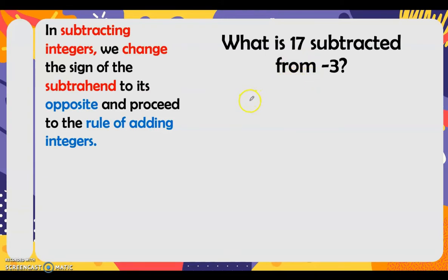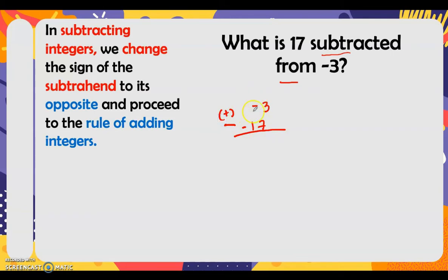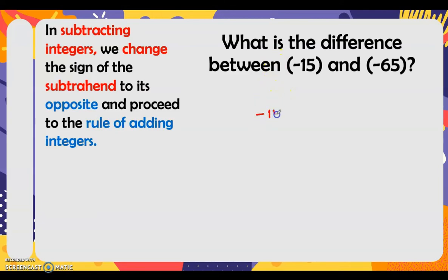Next: what is 17 subtracted from negative 3? Since it is 'subtracted from', we write negative 3 minus 17. We change the sign of the subtrahend — 17 becomes negative 17 — giving us negative 3 plus negative 17. They are like sign, so we add: 17 plus 3 is 20, then copy the common sign. The answer is negative 20.